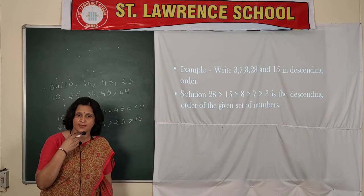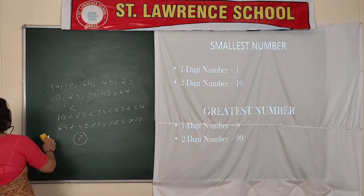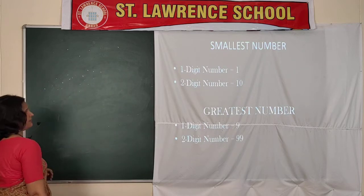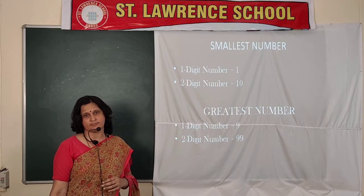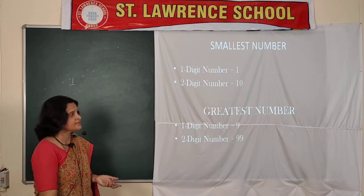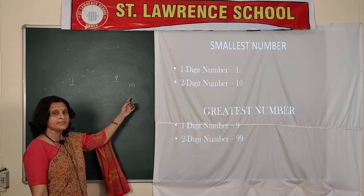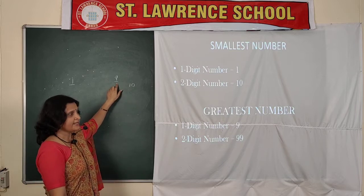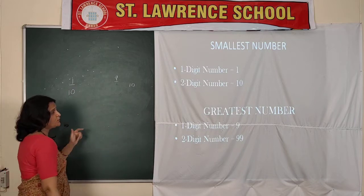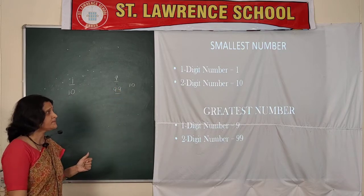I think ascending and descending order is clear to you. Now I will tell you the smallest and largest one-digit numbers. The smallest one-digit number is 1 and the greatest one-digit number is 9. After 9 comes 10, which is a two-digit number, so 9 is the greatest one-digit number. The smallest two-digit number is 10 and the greatest two-digit number is 99.